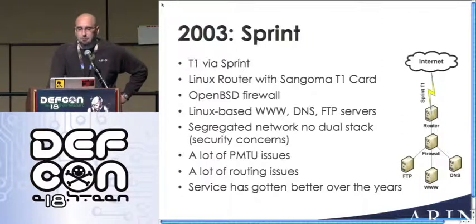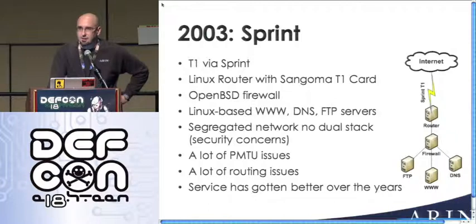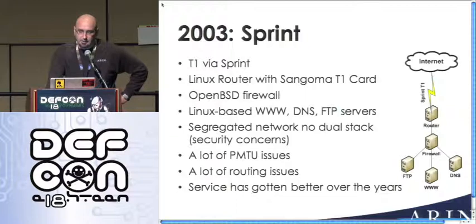We were really worried about security when we did this — one of the reasons this was a segregated network. We didn't do dual stack. We were afraid of stack smashing attacks, the ping of death. Around 1995 or 1996, that one packet could down pretty much the entire internet, affecting everything from routers to Unix to Windows boxes. We were really worried about that, so we kept this network completely separate.